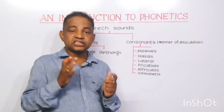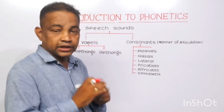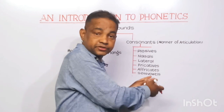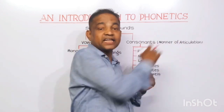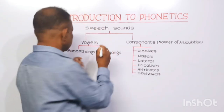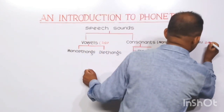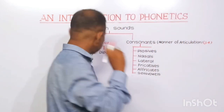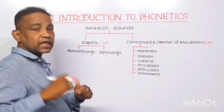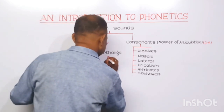Let us discuss the speech sounds of the English language. English has 44 speech sounds, and they are of two types: vowels and consonants. There are 20 vowels and 24 consonants. Those vowels are classified into two classes: monophthongs and diphthongs. There are 12 monophthongs and 8 diphthongs.